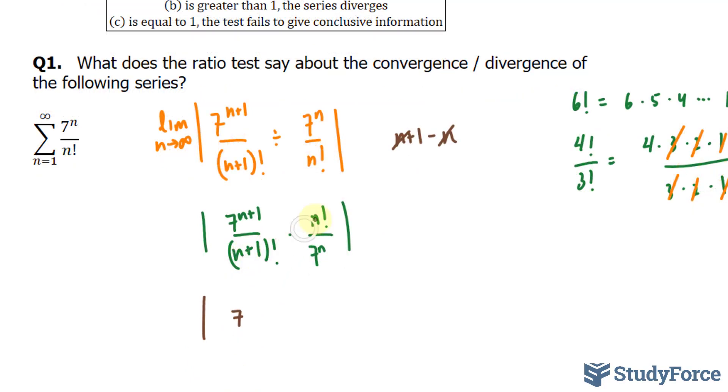Now let's concentrate on n plus 1 factorial and this n factorial. n plus 1 factorial is the same thing as saying n plus 1 times n factorial. So if we expand this into the following expression, this n factorial will cancel out with this one, leaving us with, at the bottom, the expression n plus 1.